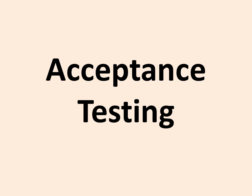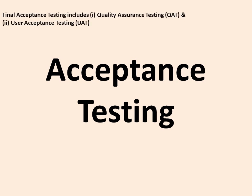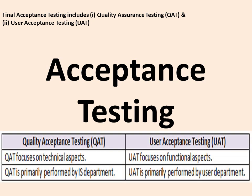Acceptance testing includes quality assurance testing (QAT) and user acceptance testing (UAT). QAT focuses on technical aspects and is done by the IS department. UAT focuses on functional aspects and is done by the user department.